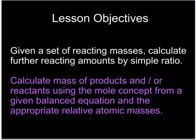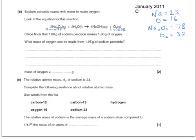Although at foundation level you can work out reacting amounts by just using simple ratio, at higher level you're expected to use moles for those calculations. Here's a past paper question: sodium peroxide reacts with water to make oxygen. Two molecules of sodium peroxide react to make one molecule of oxygen, so the number of moles of oxygen is always going to be half the number of moles of sodium peroxide.